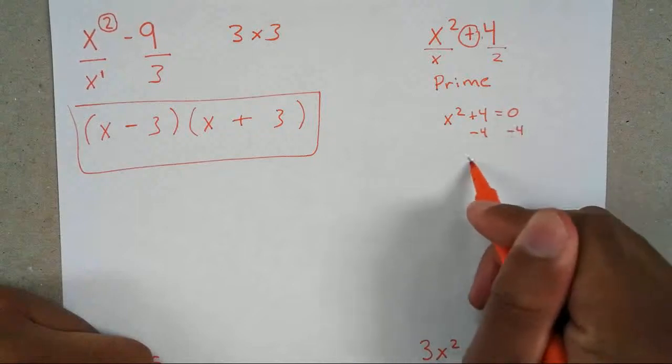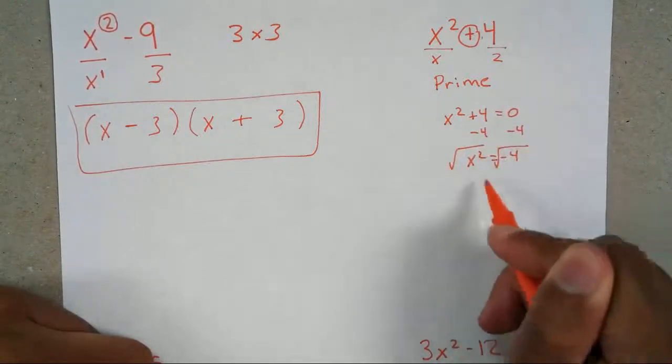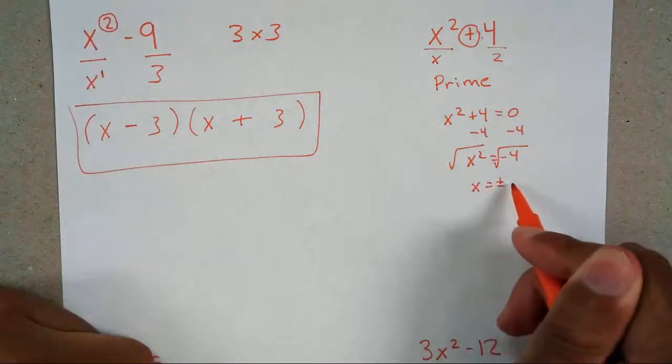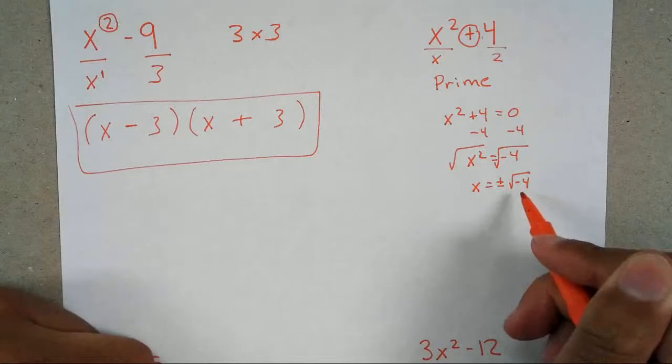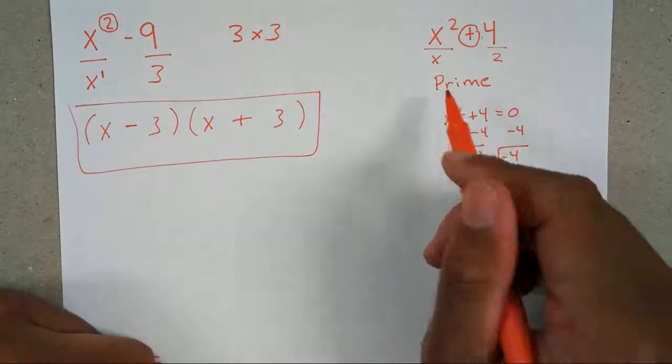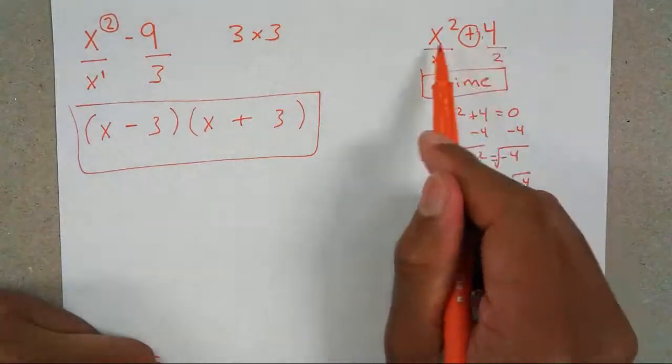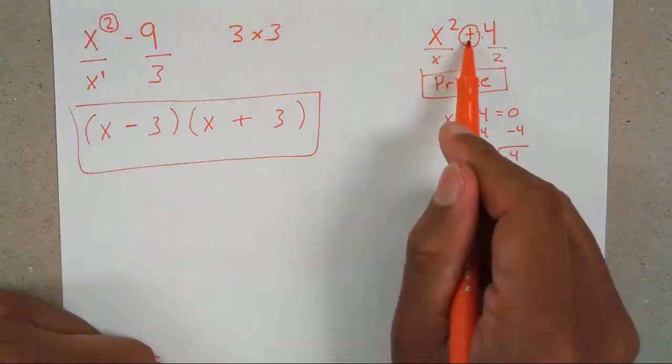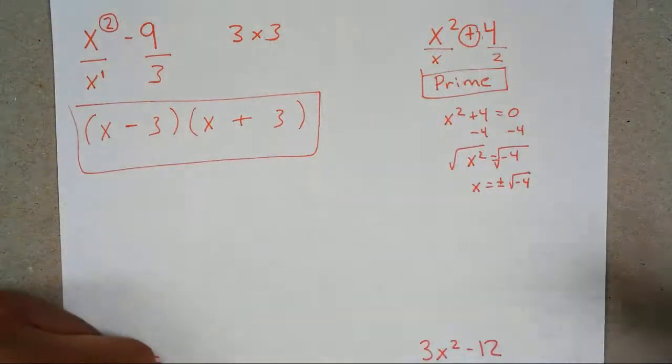The reason why it's prime is let's say I want to actually solve this. x squared plus 4 equals 0. Subtract 4, I get x squared equals negative 4. If I find the square root of both sides, x is going to end up equaling plus or minus square root of negative 4. But if you were to type that into your calculator, you can't get the square root of negative 4 because it will give you an error. That's because there is no actual x's, reason why your answer is prime. So anytime you notice that your numbers are square and your variables are square, but there's a plus sign, you can't factor it out. Your answer is always prime or not factorable.